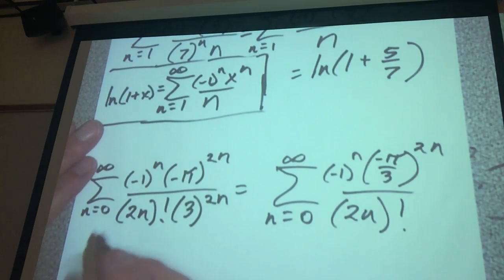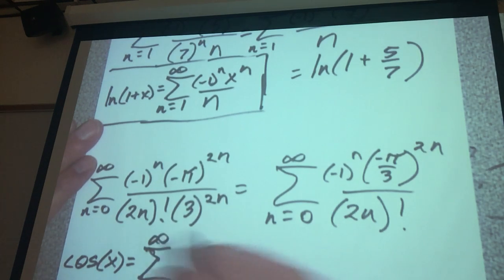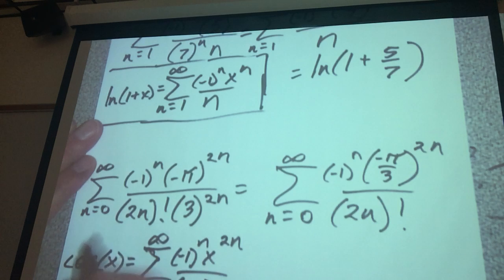And on this one, we are going to use the fact that cosine of x equals the sum n which equals 0 to infinity of negative 1 to the n, x to the 2n, divided by 2n factorial.